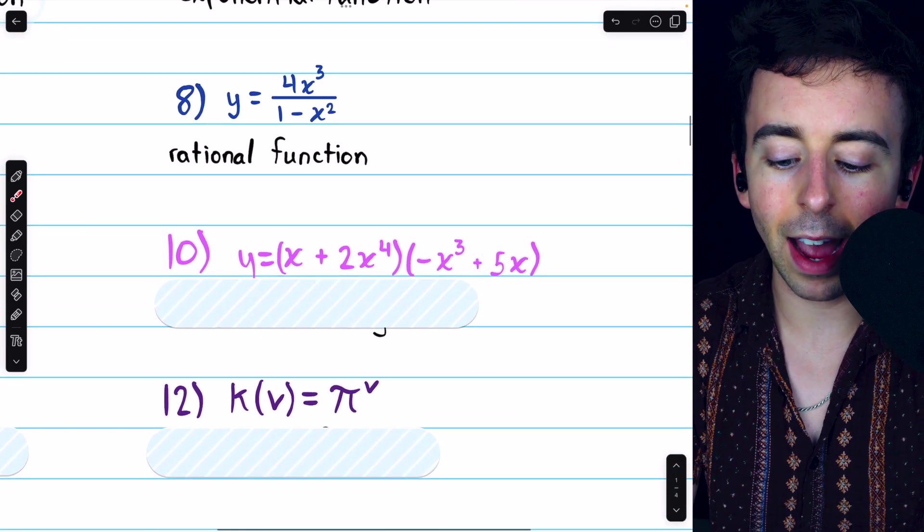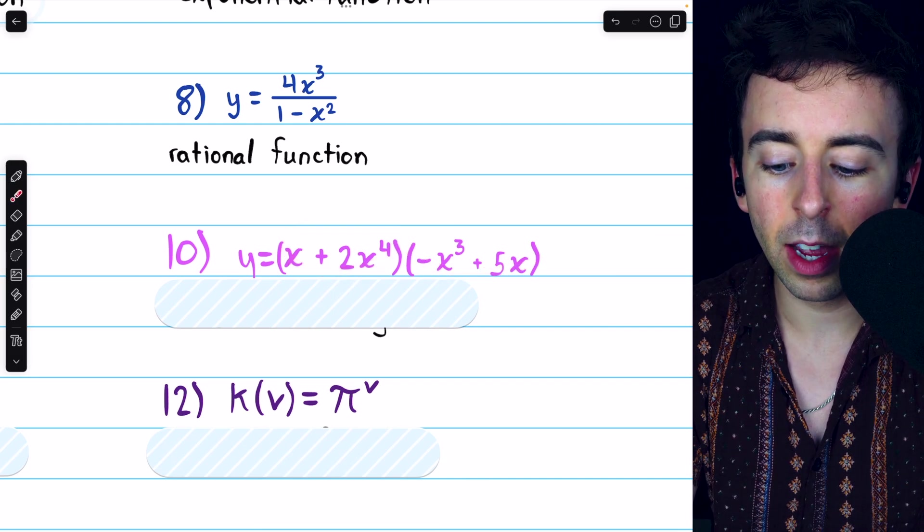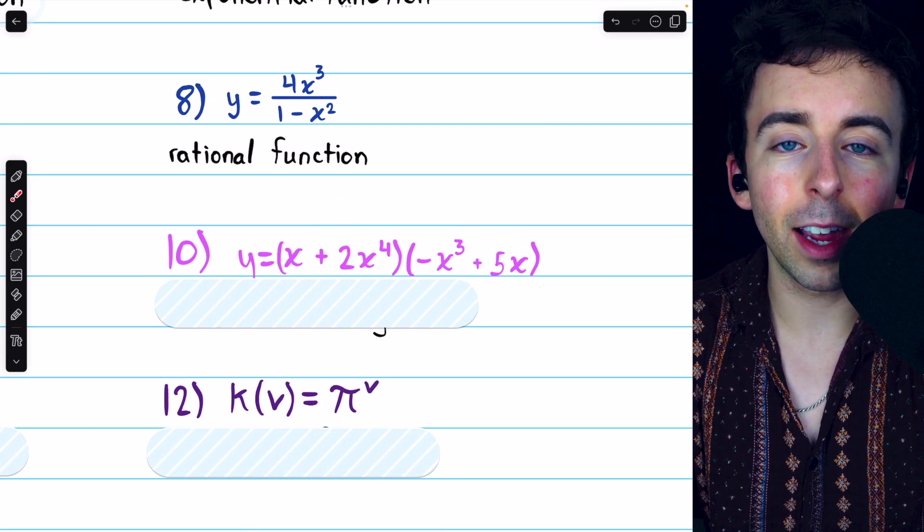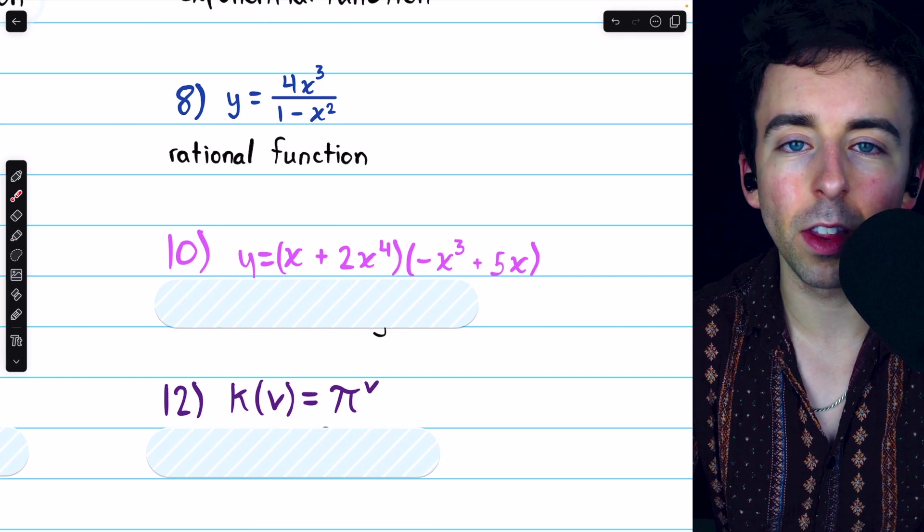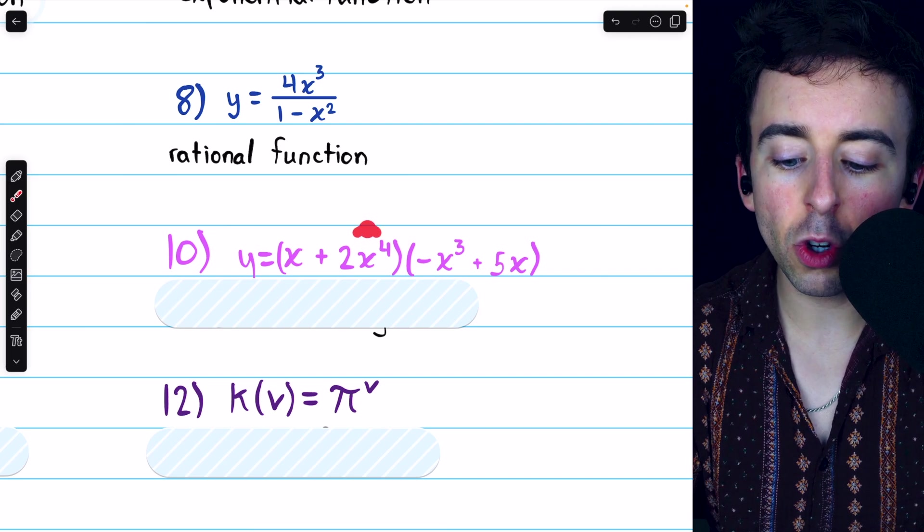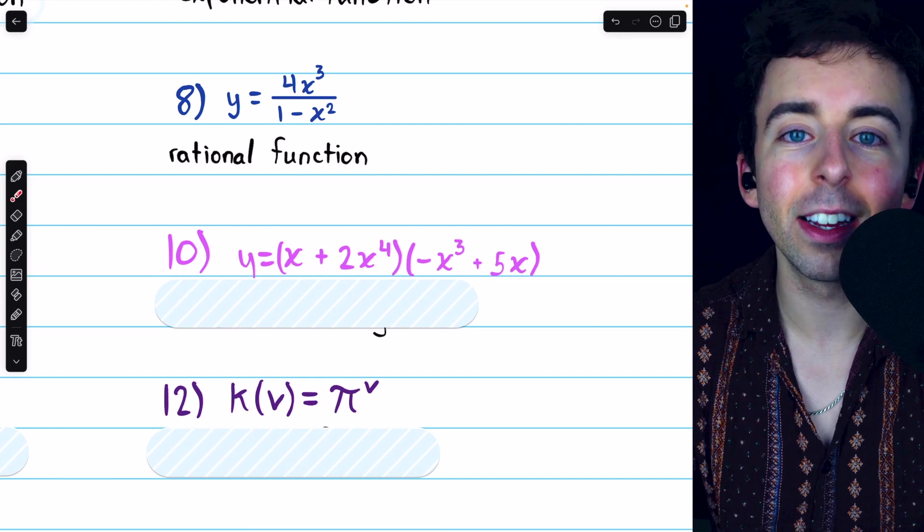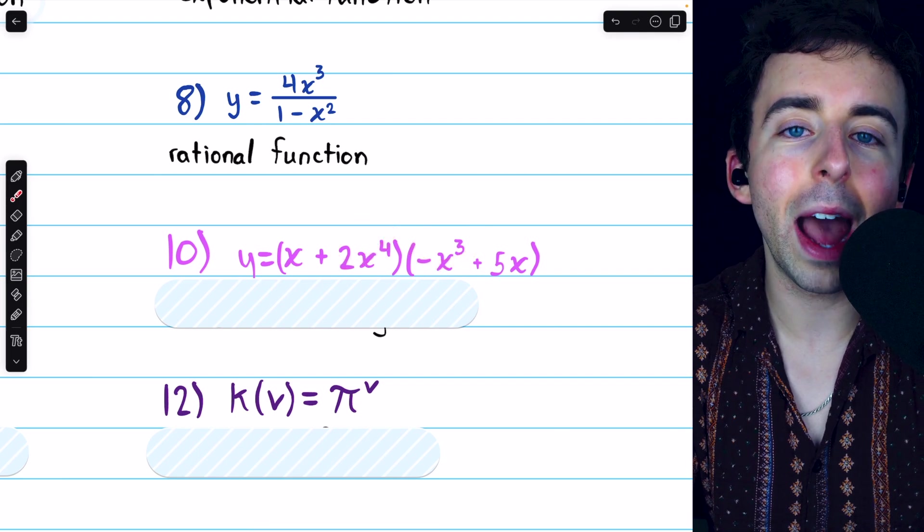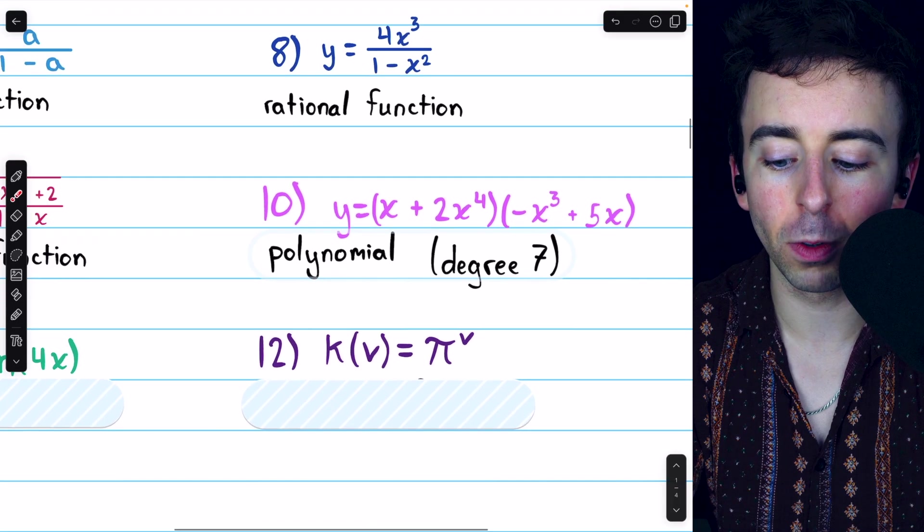Then number 10, y equals x plus 2x to the 4 times negative x cubed plus 5x. If we were to do out all of this multiplication, it would be very clear that what we have is a polynomial. In the end, we would just have a sum of terms consisting of variables with non-negative integer powers, so this is a polynomial, and it would be 2x to the 4 times negative x cubed that gives us our highest degree term. So the degree of this polynomial, well, if we did that multiplication, we'd have negative 2x to the 7. So that's the degree of the polynomial. It's a polynomial of degree 7.